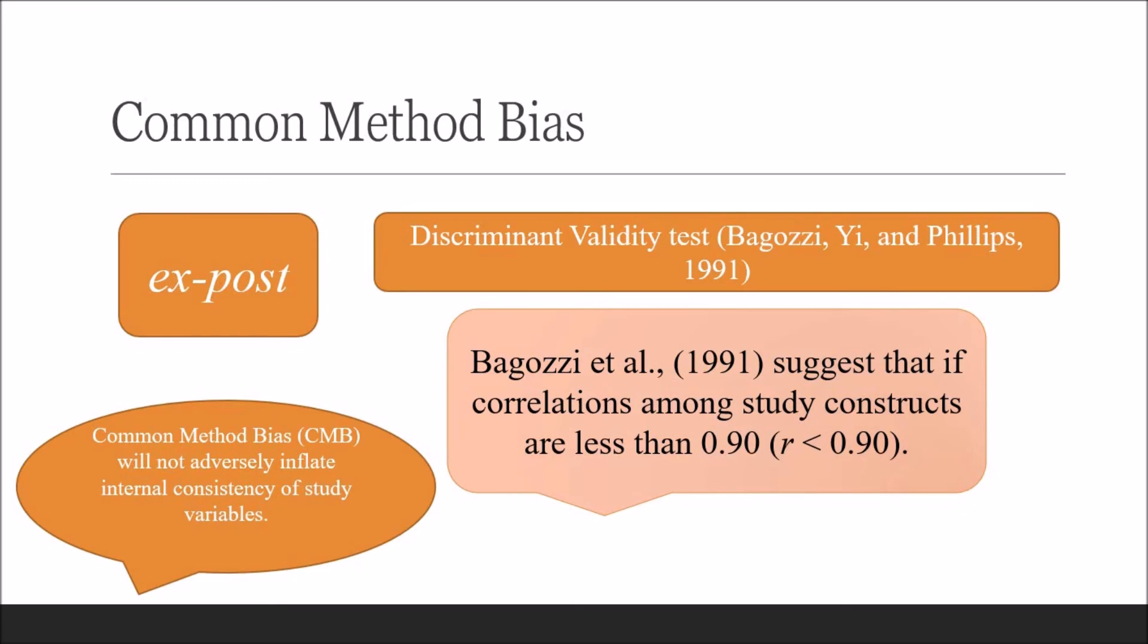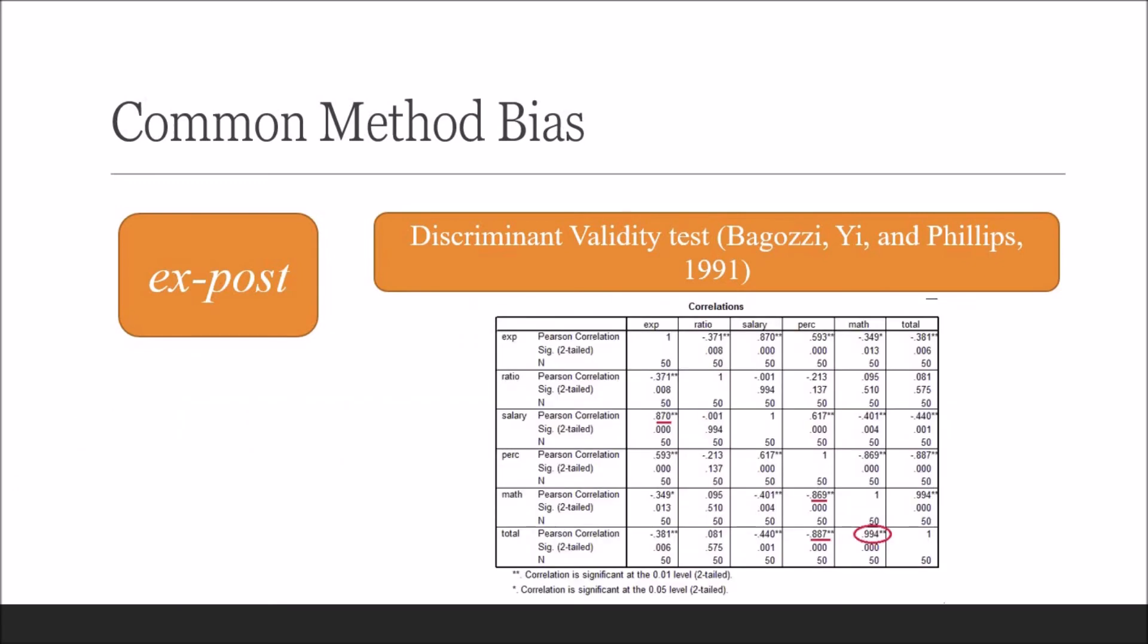In this sample correlation matrix, the correlation between total and math is 0.994. In addition, correlations between total and perception, math and perception, and salary and experience are also near the threshold level of 0.90. Therefore, we will conclude that common method bias is adversely inflating the internal consistency of study variables in this case.